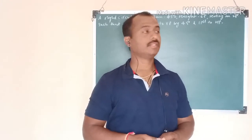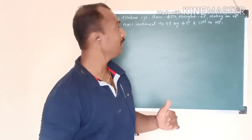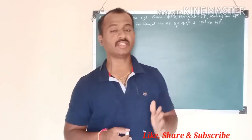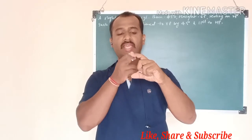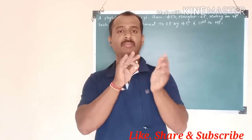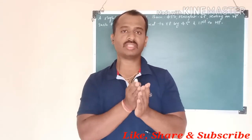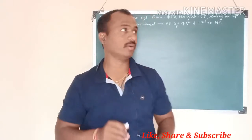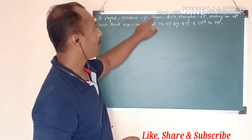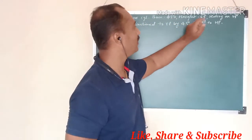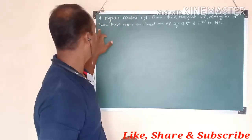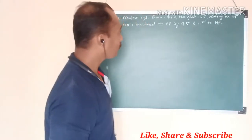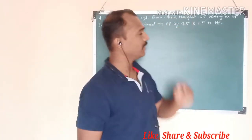In today's lecture we'll see one more solid: the right circular cylinder. 'Right' means its axis is perpendicular to the base. In this problem, the right circular cylinder has a base of 50mm diameter, height of 65mm, and it is resting on VP such that the axis is inclined to VP by 45 degrees and parallel to HP.